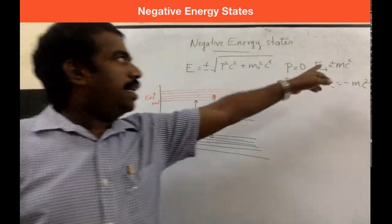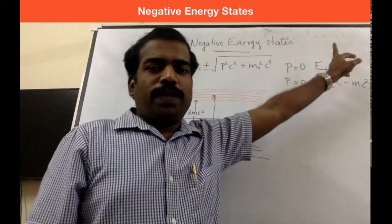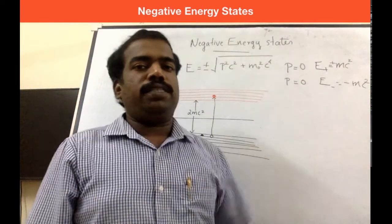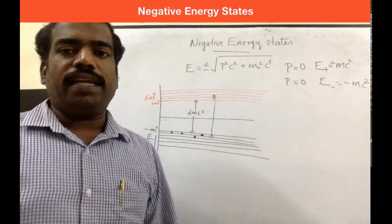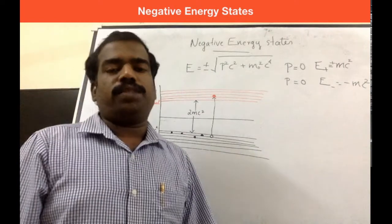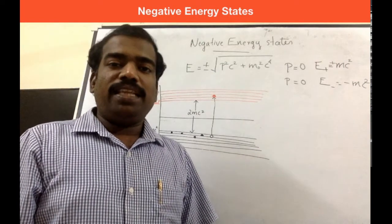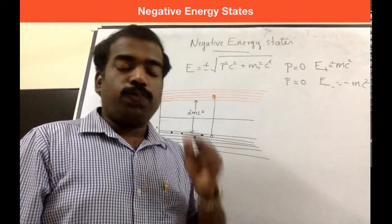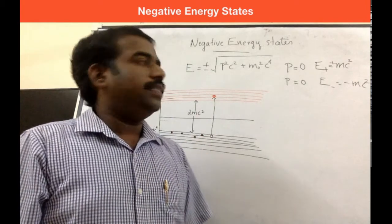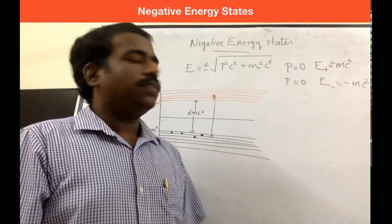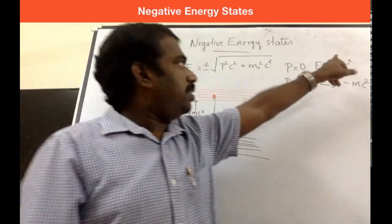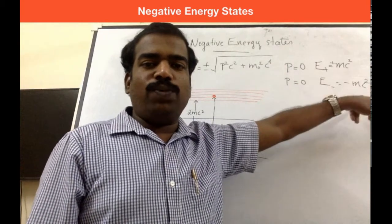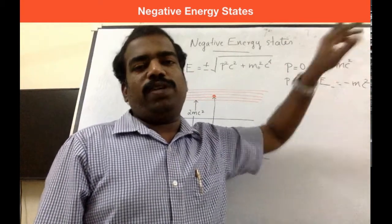So at minimum energy you can expect mc squared, and also you can expect minus mc squared, due to this relativistic energy expression. In the energy spectrum, we can expect two branches: the first one is the positive energy branch, and the second one is the negative energy branch.